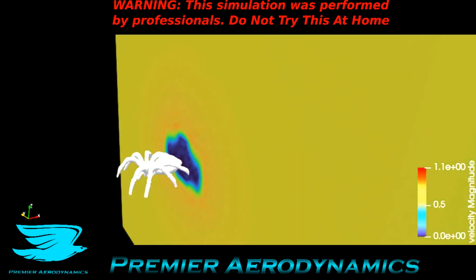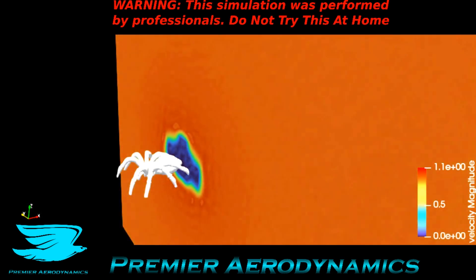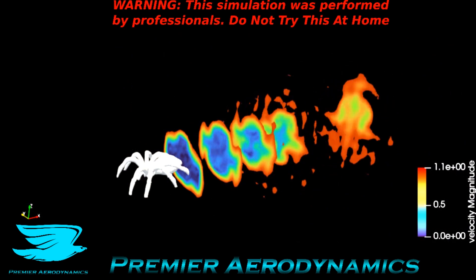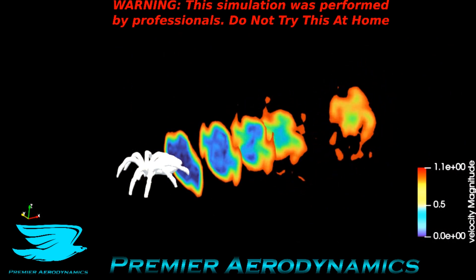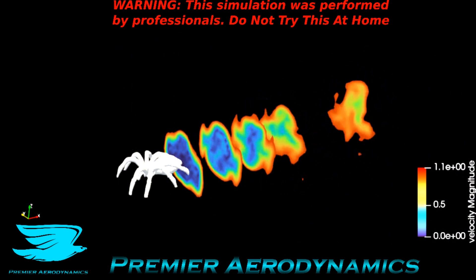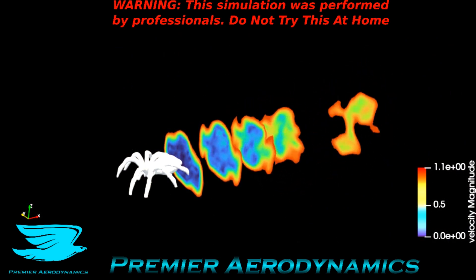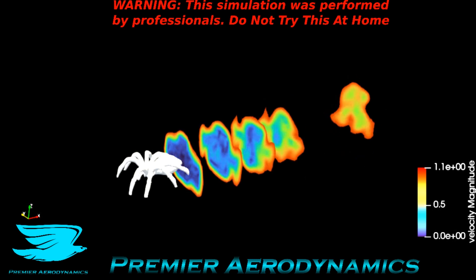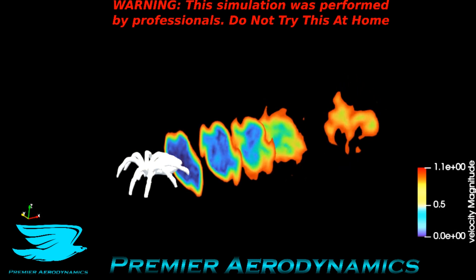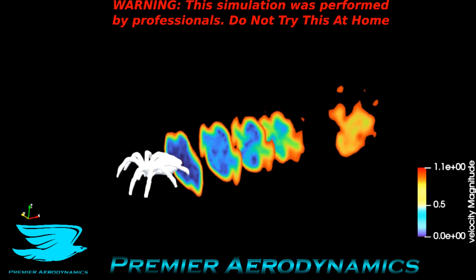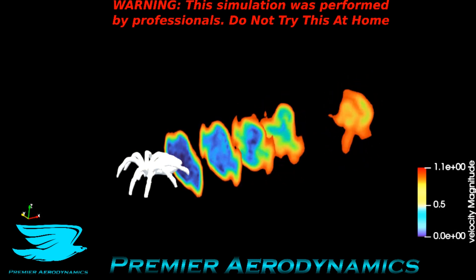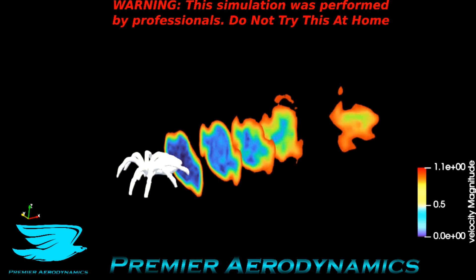What's up amigos, today we're looking at the aerodynamics of a tarantula. We have some x-planes downstream here and surprisingly the wake is very symmetrical. Even though the legs are obviously not symmetrical — they curve down at an angle — it doesn't have too much of an effect on the wake.